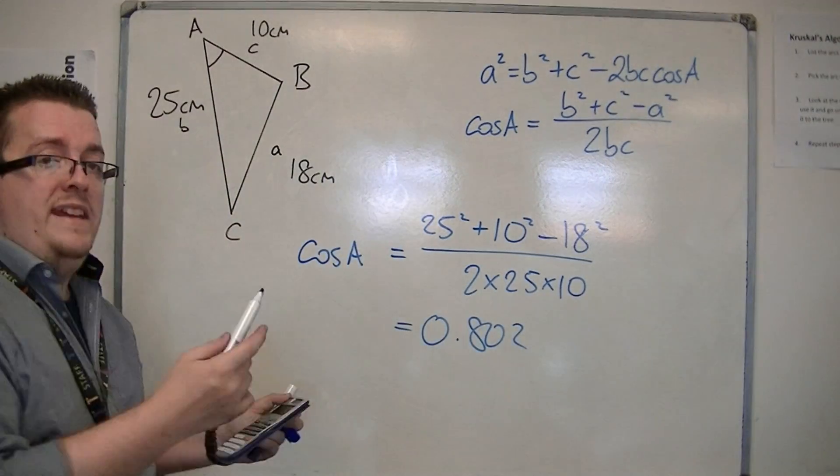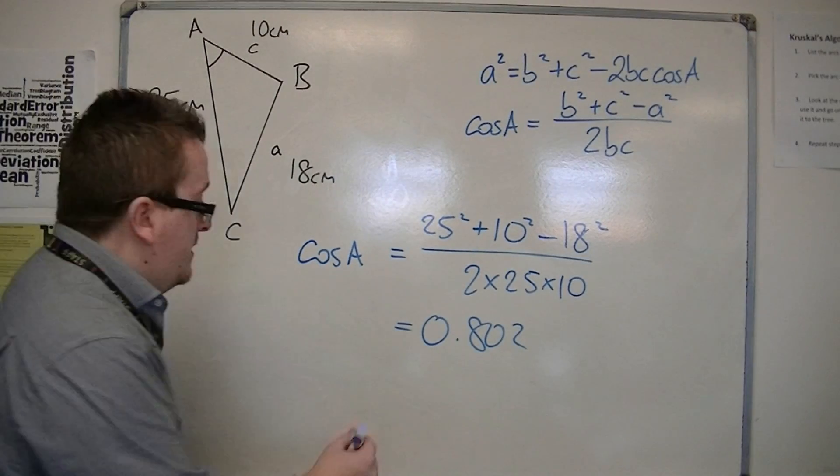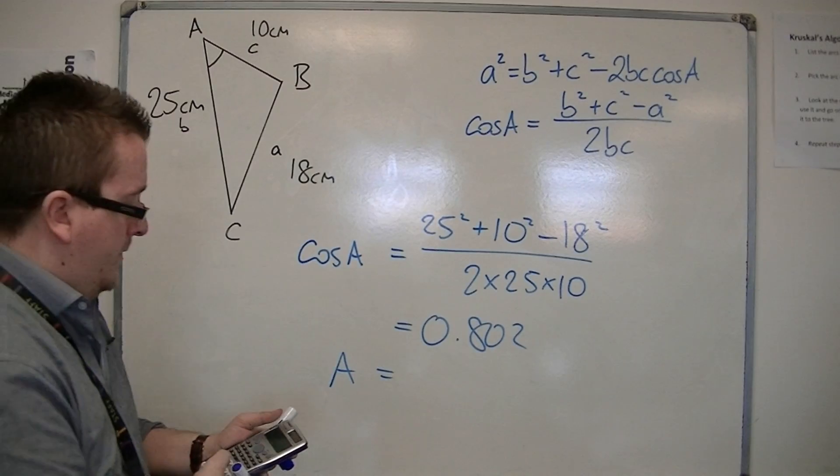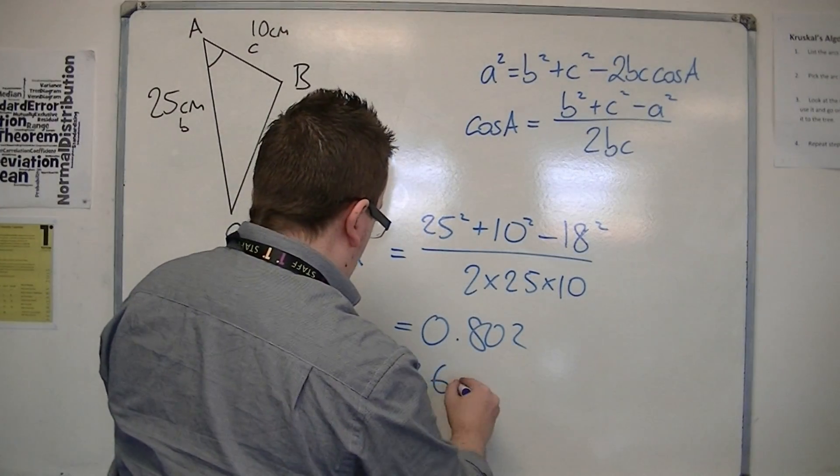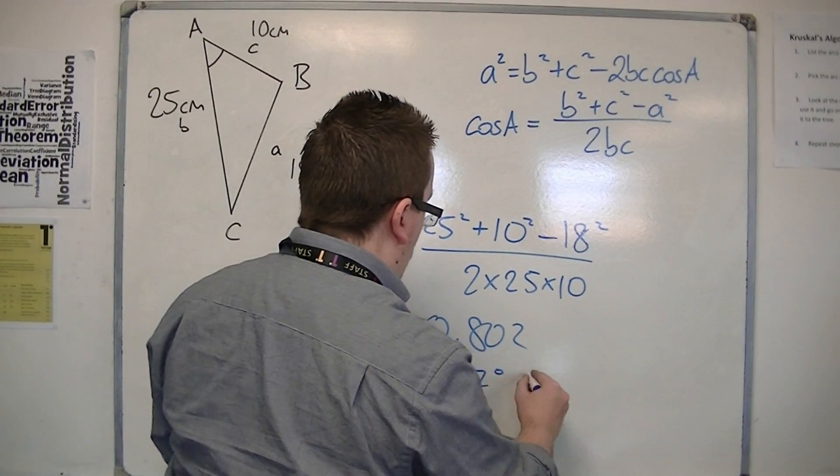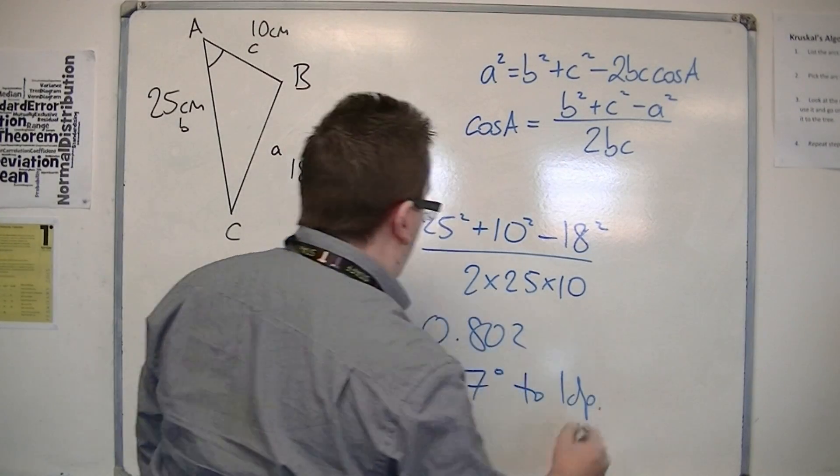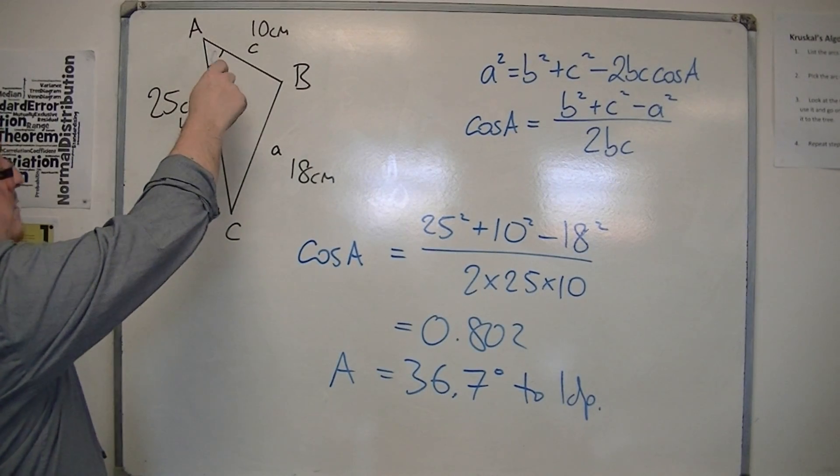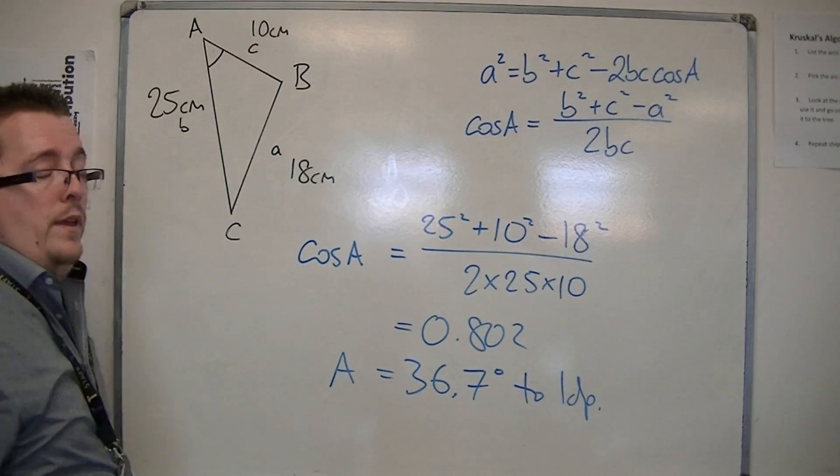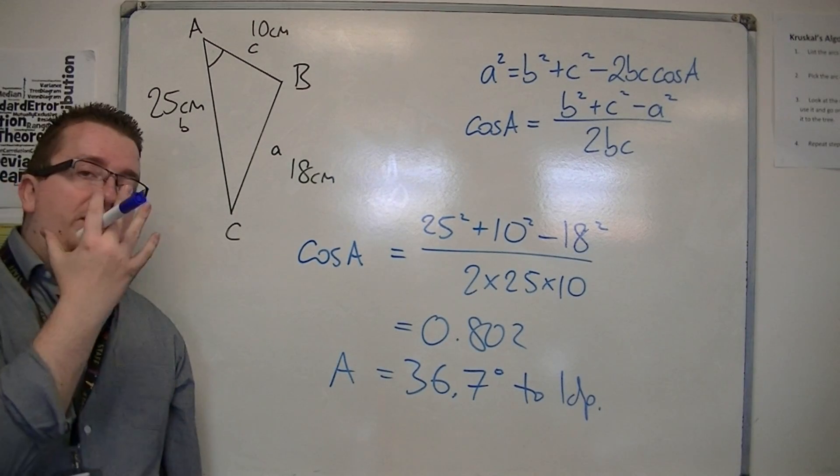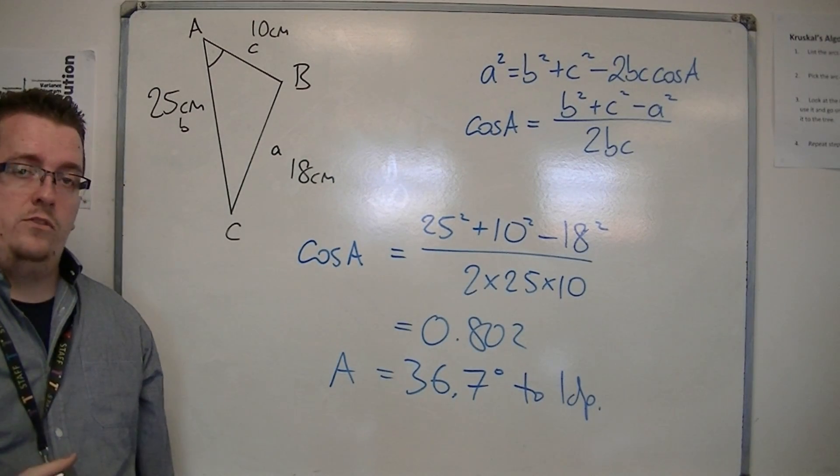Then inverse cosine both sides, so inverse cosine of that is 36.6784, so it's 36.7 degrees to one decimal place. So 36.7 degrees is that angle there, to one decimal place. So that's how you can use the cosine rule to find a missing side or a missing angle.